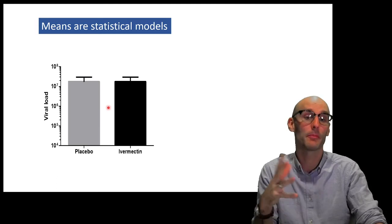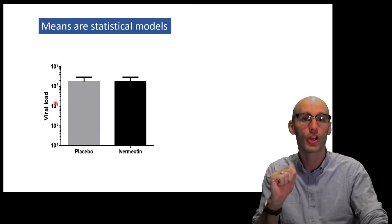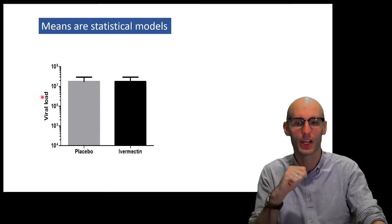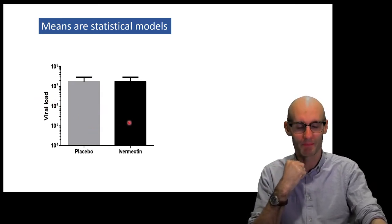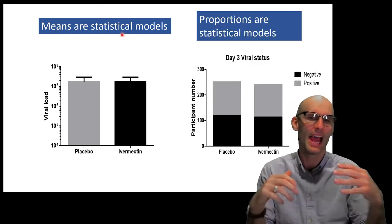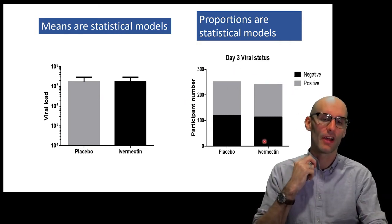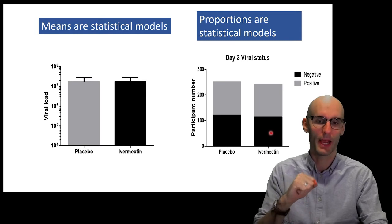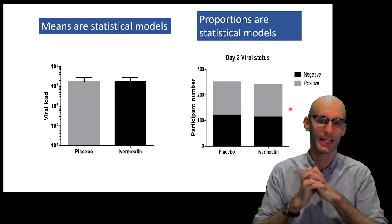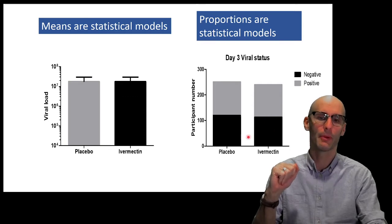Here is a couple of means here from an actual clinical trial on ivermectin versus placebo, looking at viral load of COVID-19 in the nasal cavity of these patients. Placebo versus ivermectin. You can see there's not a lot of effect there, and so means are statistical models. Other stats as well, like proportions, are statistical models.